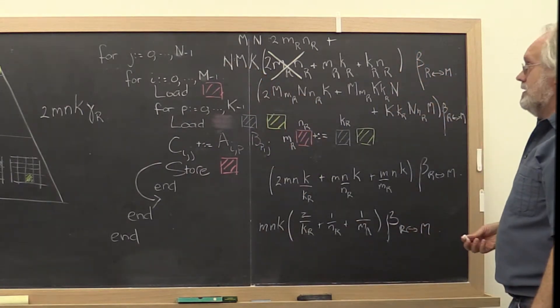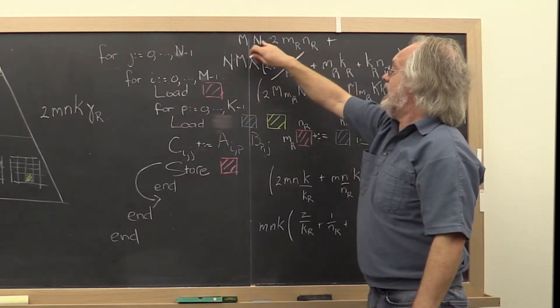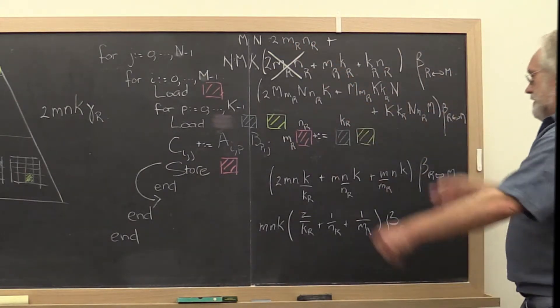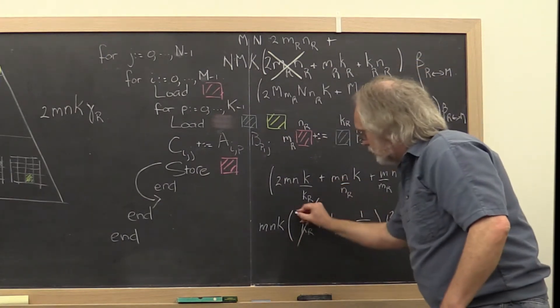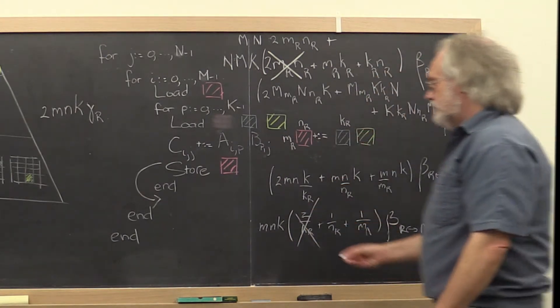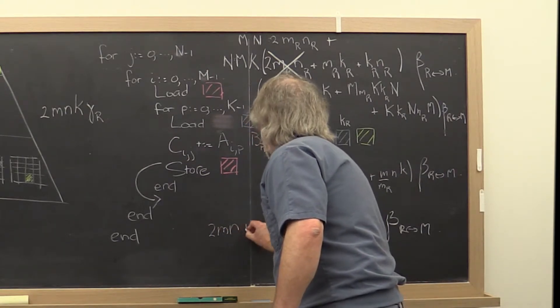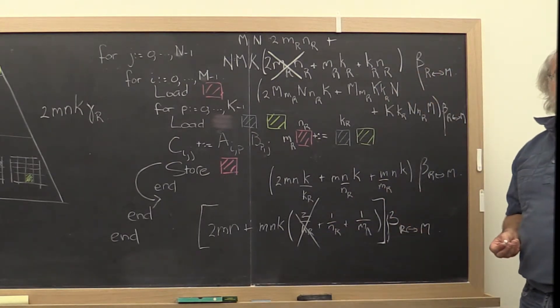Now notice that m times m r is just m, n times n r is just n. So if we follow this all through, then this term disappears and is turned into a term 2mn as such.